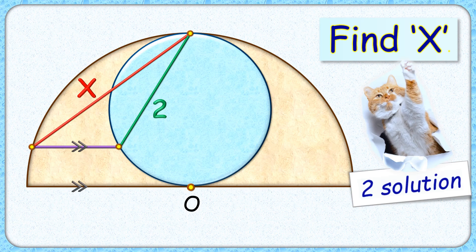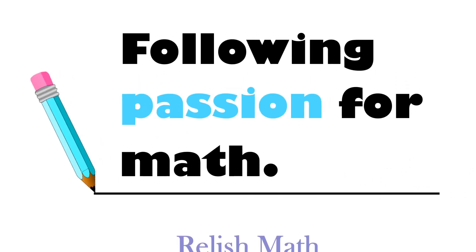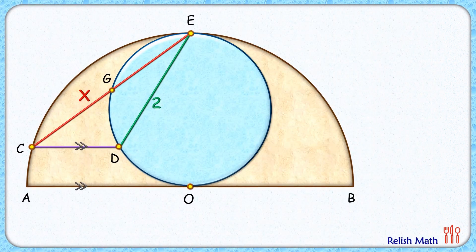Welcome everyone to this interesting question where given to us is a circle inside a semicircle. The length of this green chord is 2 centimeters. This purple line segment is parallel to the diameter of the semicircle. With this limited data we have to find the length of this red line segment, or value of x. We'll solve the same question in two ways: first a formal approach, and second a logical approach where we'll solve without any geometrical theorems.